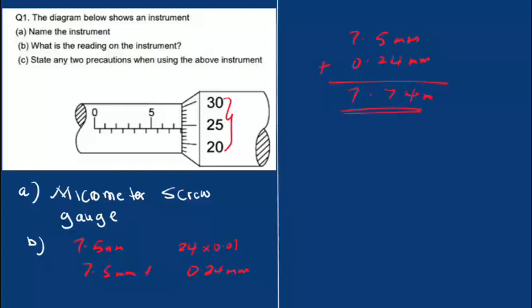State any two precautions when using the instrument. About two precautions, we mean the things that you need to take into consideration before you use the instrument or when using the instrument.